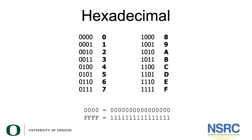We're going to show you a brief representation of how you convert binary to hexadecimal. Remember that hexadecimal is base 16 and binary is base 2. With hexadecimal, numbers go from 0 all the way to F: 10 is A, 11 is B, 12 is C, 13 is D, 14 is E, and 15 is F. As you can see on the screen, 0 in hexadecimal is 0000 in binary, 1 is 0001, E is 1110, and F is 1111.